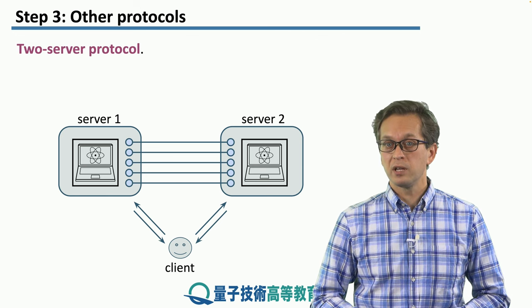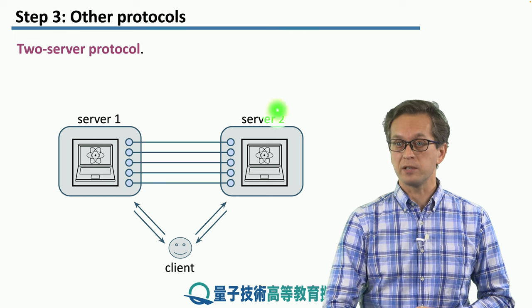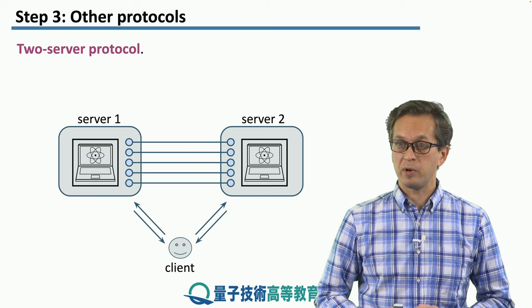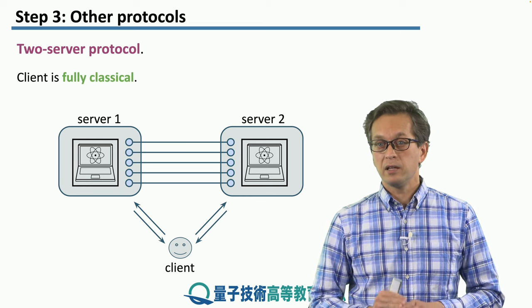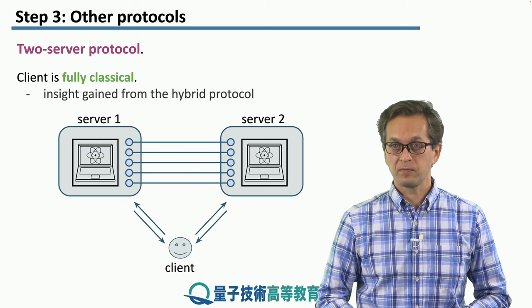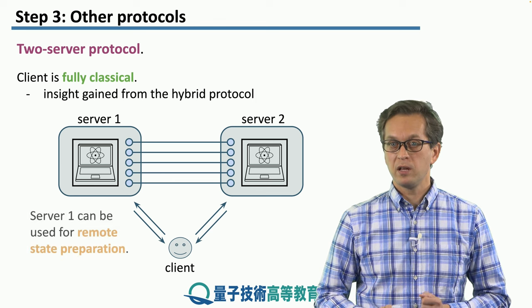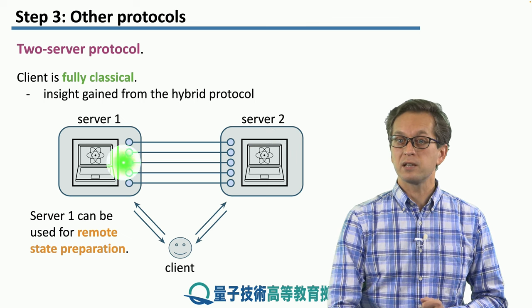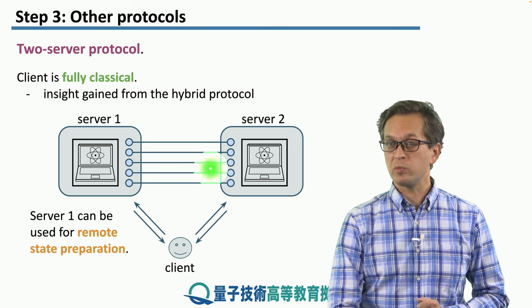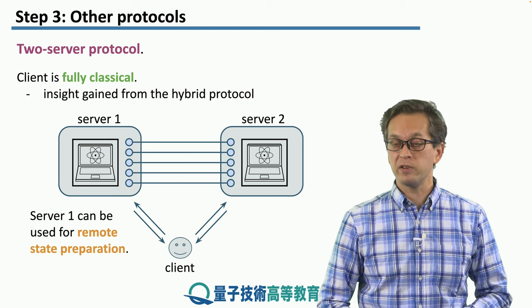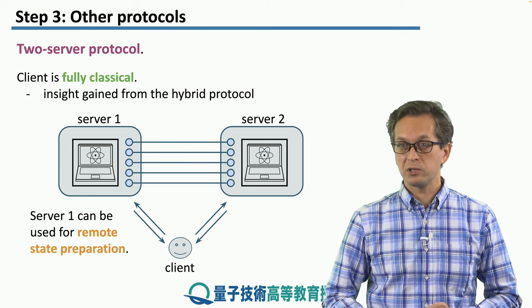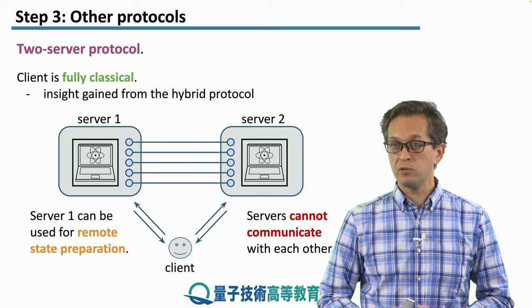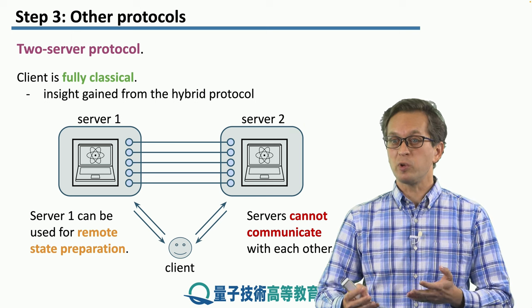The last protocol is a two-server protocol. We have two quantum servers — server 1 and server 2 — that share Bell pairs, with the client communicating with both. The nice feature is that the client can now be fully classical: it doesn't need to prepare or measure any qubit states. The client instructs server 1 to remotely prepare states on server 2 by sending measurement bases, collapsing qubits into states in the XY-plane, after which the BFK protocol is applied. One crucial assumption is that the servers must be non-communicating.